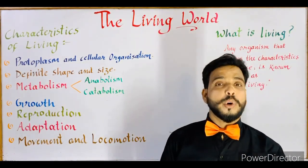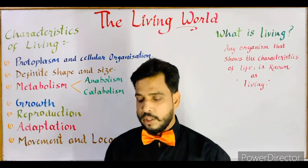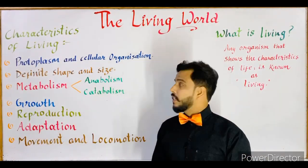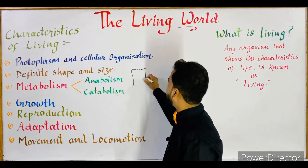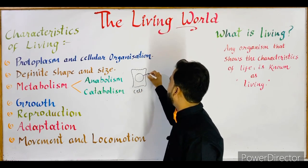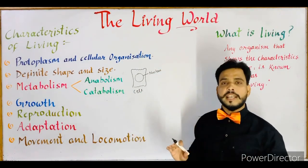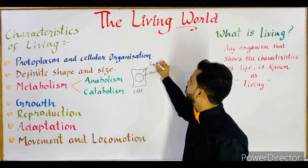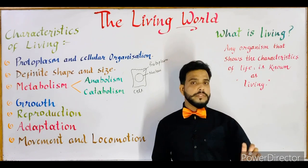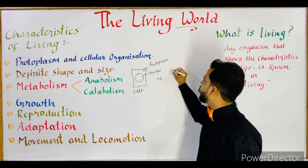The first characteristic of living is protoplasm and cellular organization. We all know that our body is made up of cells. The cell is the basic structural and functional unit of all living beings. Inside the cell, a nucleus is present, and the liquid which fills the inside of the cell is known as protoplasm.